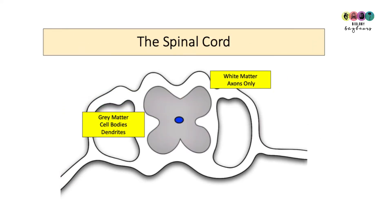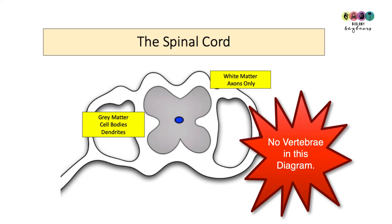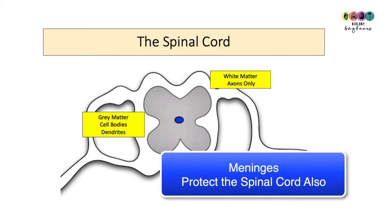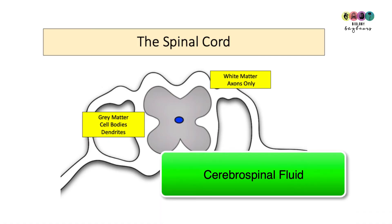Let's take a closer look at the spinal cord. It's protected by those bones in your back, the vertebrae, but they don't appear in this diagram. Bear that in mind. It's also protected by those membranes, the same membranes that protect the brain, the meninges and in between those is that liquid cerebrospinal fluid.